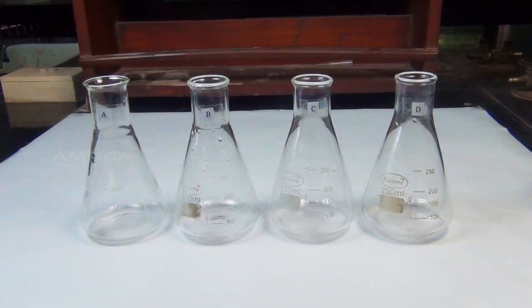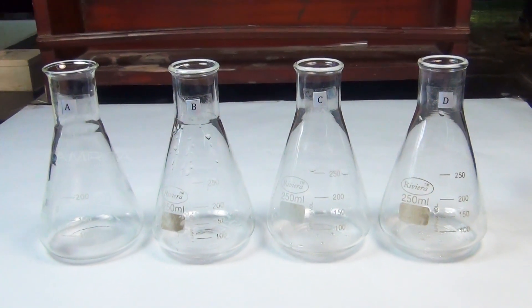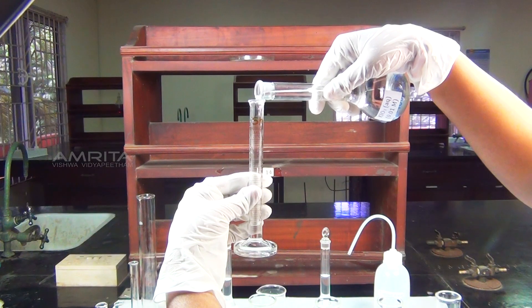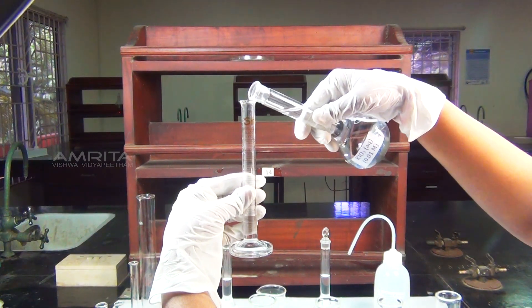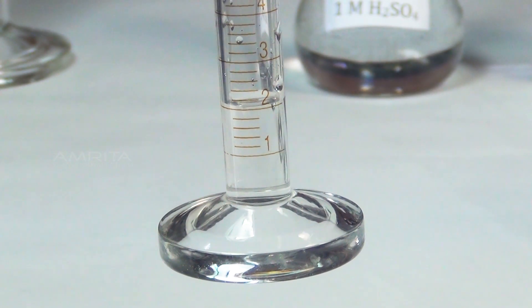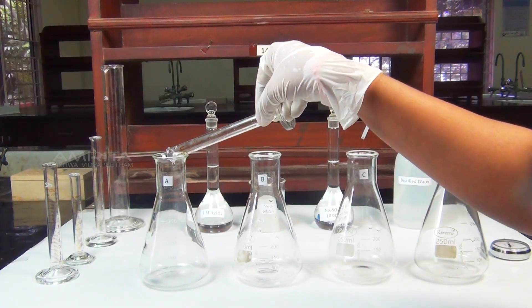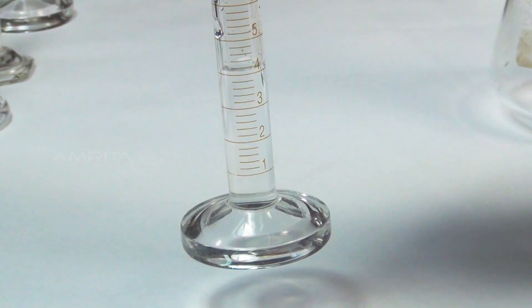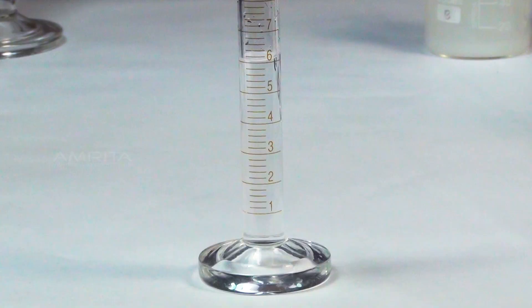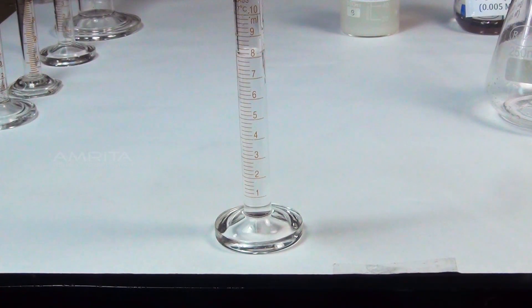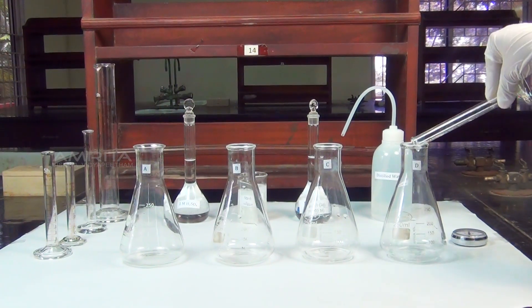Procedure: Take 4 250 ml conical flasks labelled as A, B, C and D. Measure 2 ml of 0.01 molar potassium iodate solution in a measuring cylinder and transfer it into flask A. Then add 4 ml of potassium iodate solution to flask B, 6 ml to flask C and 8 ml to flask D using the measuring cylinder.